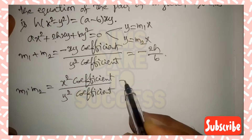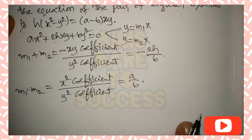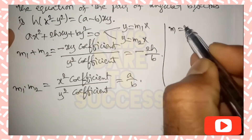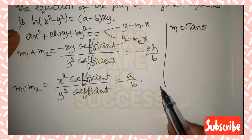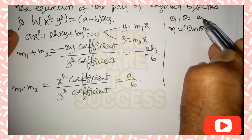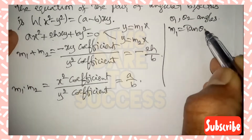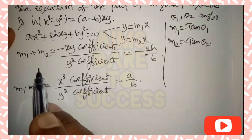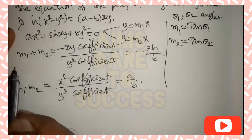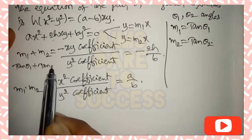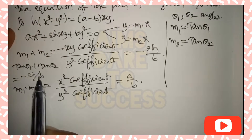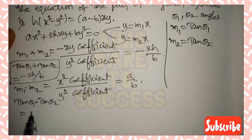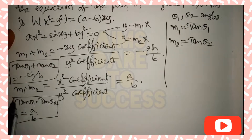Memory concept: x² coefficient is a, y² coefficient is b, so m₁ + m₂ = −2h/b and m₁ · m₂ = a/b. Since m = tan θ relates slope to angle, we write m₁ = tan θ₁ and m₂ = tan θ₂. Substituting: tan θ₁ + tan θ₂ = −2h/b and tan θ₁ · tan θ₂ = a/b.